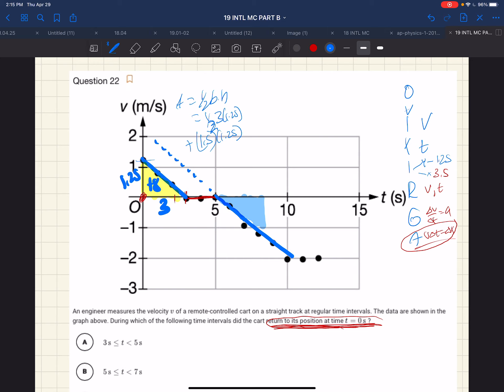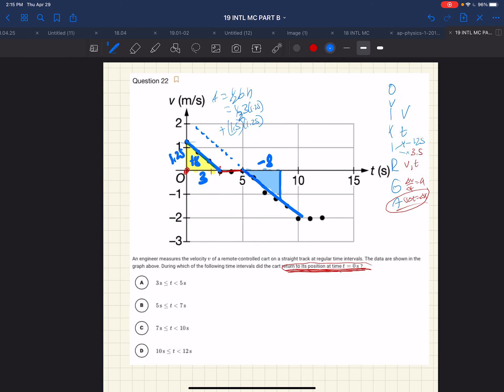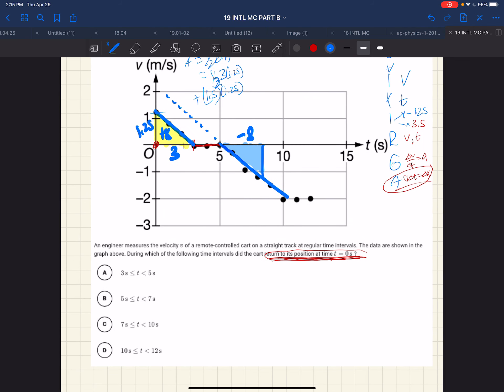So we expect at a time of about 8 seconds, we would be at our return position. It definitely does not happen between 3 and 5—that's still at maximum positive displacement. 5 to 7 would be in this range, but no, it's decreasing but not zero yet. 7 to 10: it definitely occurs there, and we do not need to go as far as 10 seconds. 8 is smack dab in the middle, and that's why it's choice C.